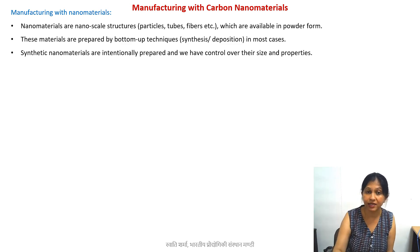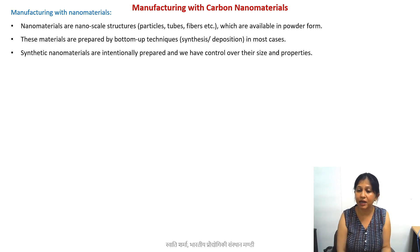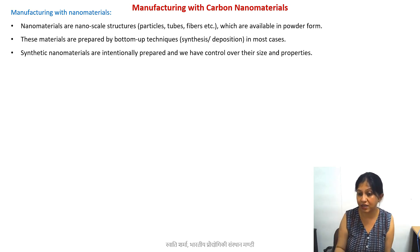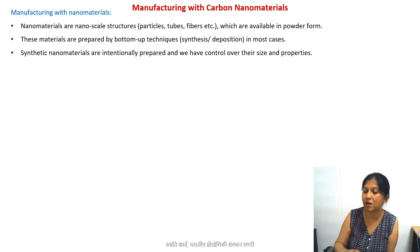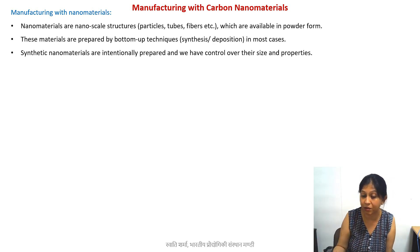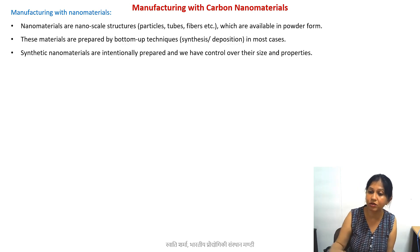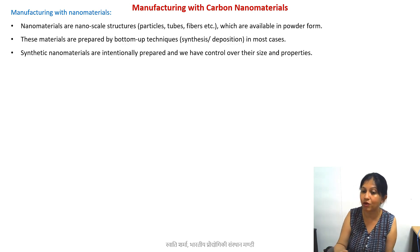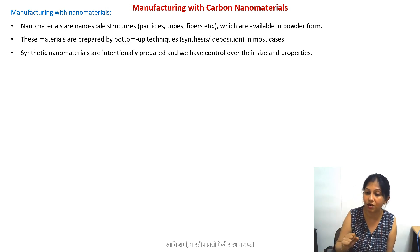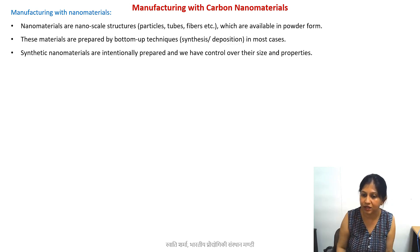Nanoscale materials are typically prepared by bottom-up approaches. This is not always the case — for example, carbon fiber can sometimes be made by electrospinning to get nanoscale fibers. So top-down approaches are not impossible, but bottom-up approaches work better for nanomaterials because you have more control over the properties. Since the structures are just a few nanometers, it's better if they are atomically deposited, giving you better control.